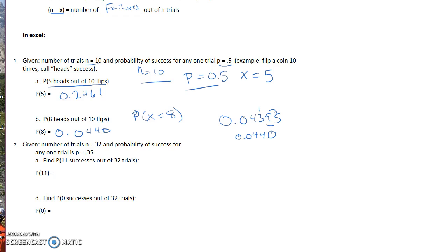All right, the next one I'm going to take a look at is if we have 32 trials, so again, N here is going to be 32, so N is equal to 32. And it says the probability of success for any one trial is 0.35, so I know my P is equal to 0.35. This says find the probability of getting 11 successes. So in this case, X is equal to 11.